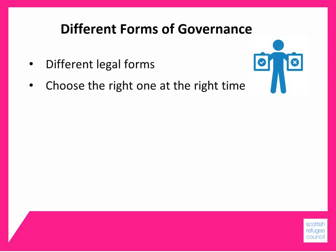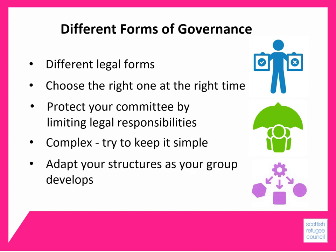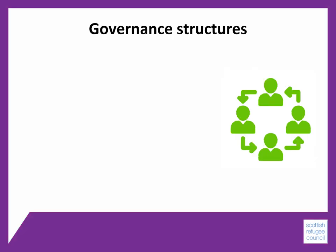Different types of governance will take different legal forms and what matters is that you choose the right one at the right time. As your organisation begins to deliver services, employ staff or buy or lease property, there is the potential for you to make legal mistakes. Many of the governance options will provide protection for committee members from individual action being taken against you for these mistakes. So it's important that you protect the committee by limiting legal liabilities using the governance options. This is a complex area and the fact sheet on the web page will help you to understand it. You should try to keep it simple for as long as you can, and adapt your structures as your group develops rather than develop the most complex one for all eventualities at an early stage. We strongly recommend that you speak to the agencies listed there to get advice on the right governance structure for your group.